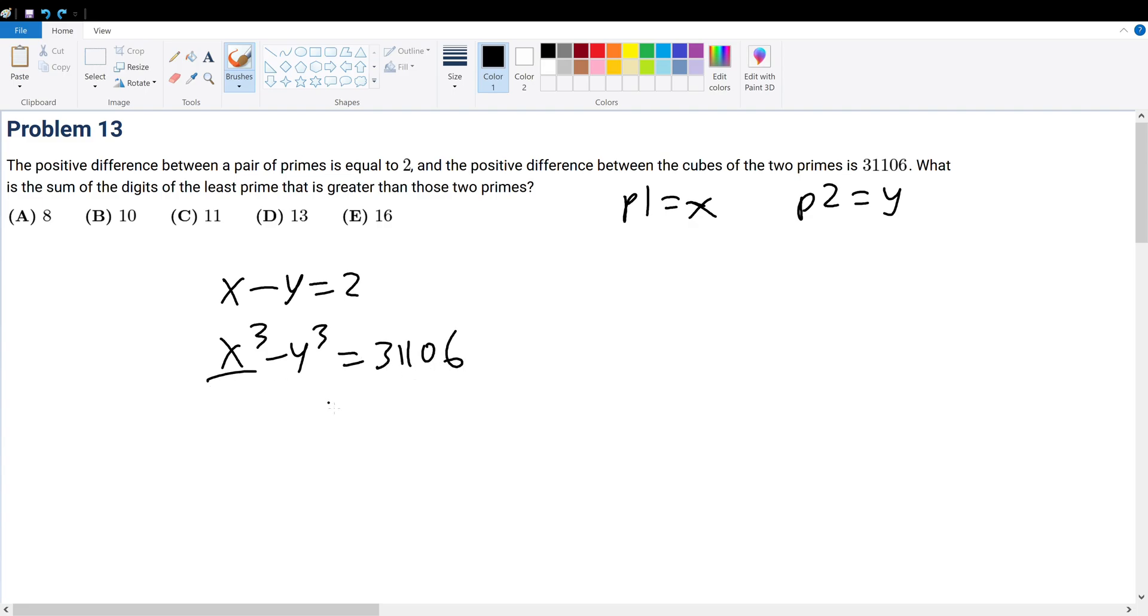Now x cubed minus y cubed has a special factorization formula: x minus y times x squared plus xy plus y squared must give 31106.